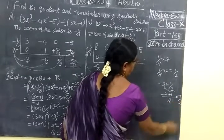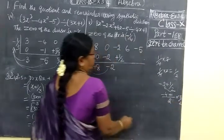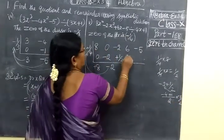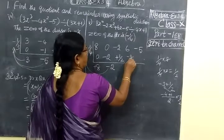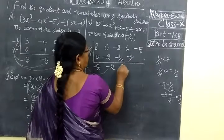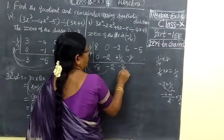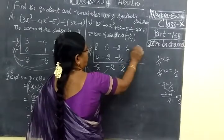Here you write minus 3 by 2. So on this side you are writing minus 3 by 2.